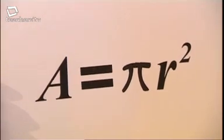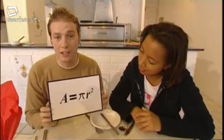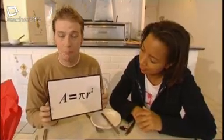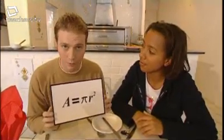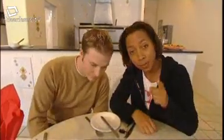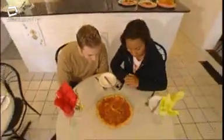Where A stands for the area, R is the radius of the circle, and pi is a Greek letter which stands for a number approximately equal to 3.14. But more of that later on — you need to remember that formula, and to help you do that, watch this.